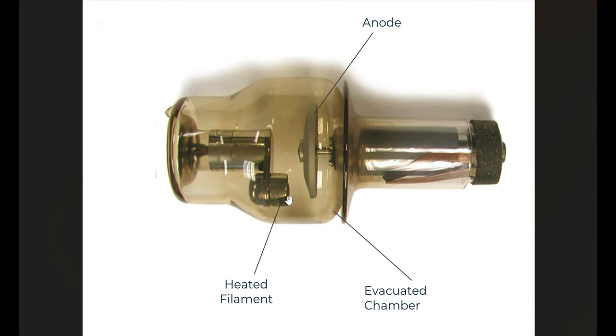Coming back to our x-ray tube, we have our heated filament where the electrons come off and are accelerated towards the anode across this gap. That anode is held at a positive charge, and the voltage difference between the negative cathode and the positively charged anode — the higher that voltage difference, the faster the electrons move and the higher energy the x-rays we produce will be. If we increase the mAs, we increase the number of electrons accelerated towards the anode, increasing the number of x-rays generated. So that's KV and that's mAs.